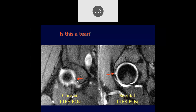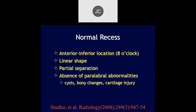When we look at other images, this was actually a normal recess. The typical normal recesses, commonly seen in the anterior inferior location around the eight o'clock position, are linear, look like partial separations, and don't have any surrounding abnormalities. So very far anteriorly and very far posteriorly, if I see that, I'll usually either ignore it or describe it as a chondrolabral separation, most likely a normal recess.